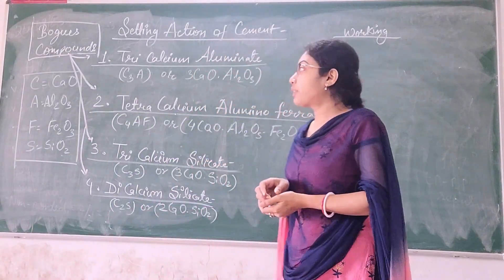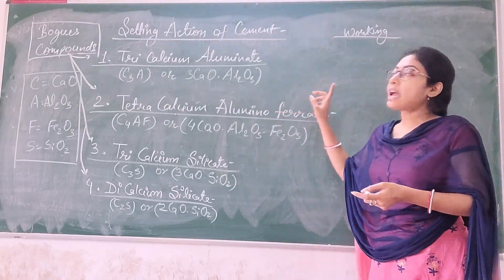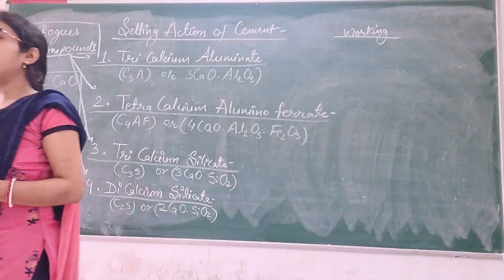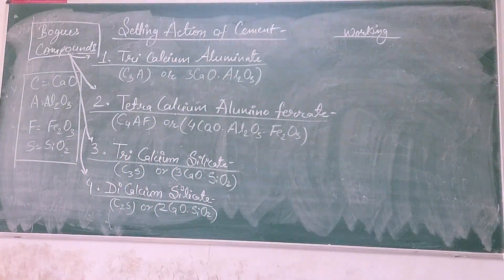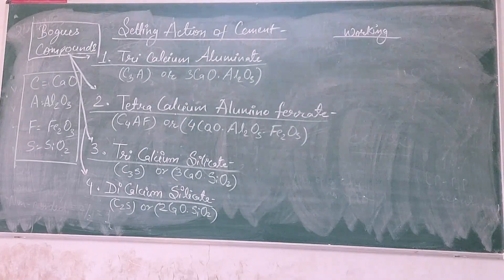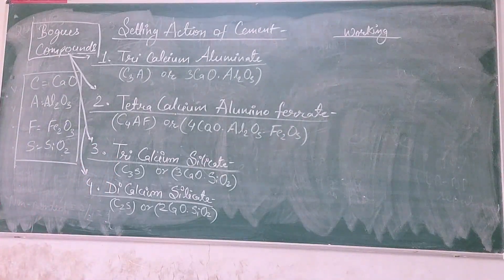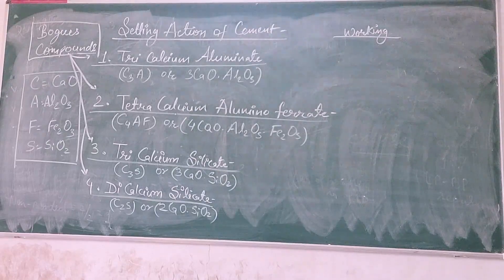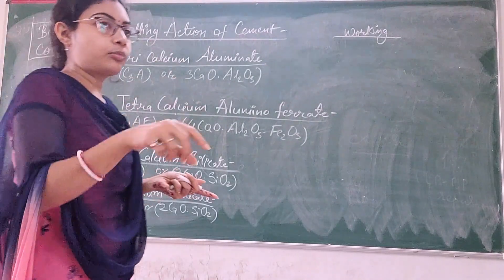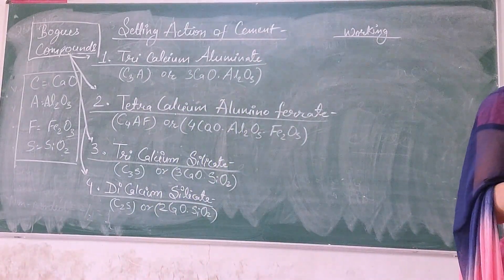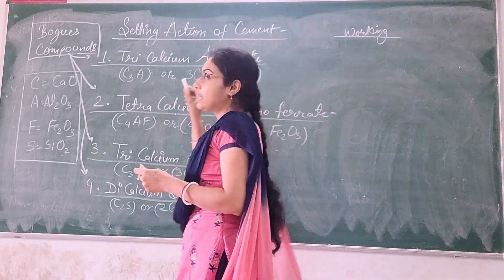Today we are starting our class with one important topic — the setting action of cement, that means how your cement gets set when you add water. We have seen the definition of cement, the types of cement, and we are left with the manufacturing process of cement. After that I will revise the types of cement one more time, and cover the wet and dry process of manufacturing cement.